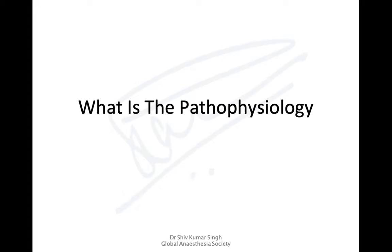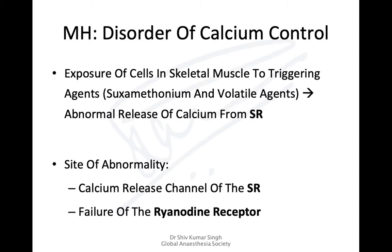Regarding the pathophysiology of MH: exposure of skeletal muscle cells to triggering agents — succinylcholine and volatile anesthetics — leads to abnormal release of calcium from the sarcoplasmic reticulum. The site of abnormality is the ryanodine receptor.